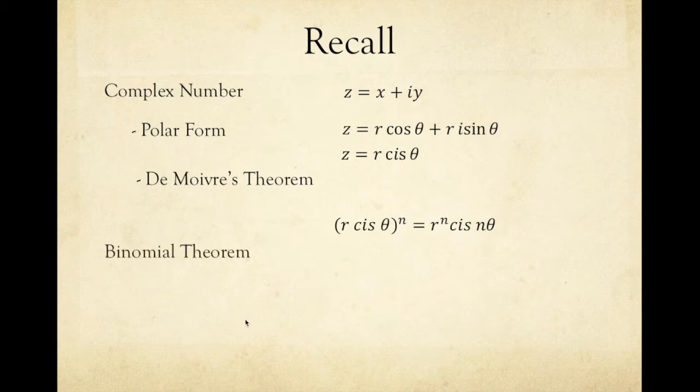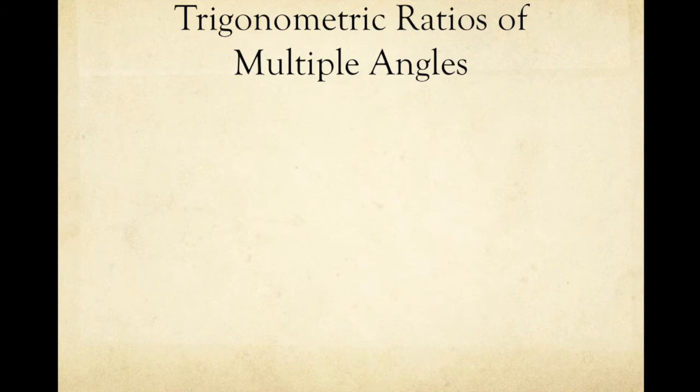Of course, we also need the binomial theorem. So let's begin with deriving the basic double-angle identities — for example, cosine 2 theta and sine 2 theta.